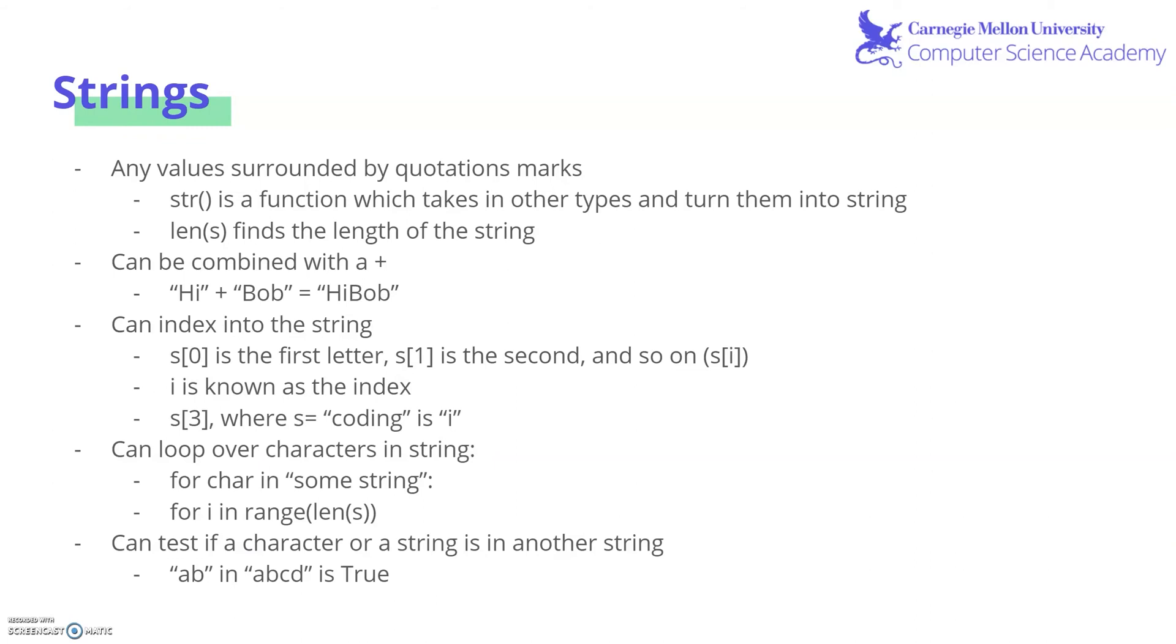Now that we know what strings are, let's learn a little bit more about what we can do with them in Python. Again, strings are any value surrounded by quotation marks. We also have this string function, which takes in any other type and converts it into a string. We also have len s, which takes in a string and finds the length of the string, which is the number of characters in it. We can also do operations with strings with addition. By adding two strings, you combine them together. So high plus bob becomes high bob with no space.